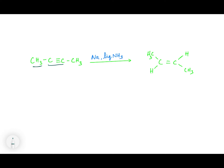This is the Birch reduction reaction. This is a disubstituted alkyne because both the hydrogens have been substituted by a methyl group. When you add sodium in liquid ammonia, what is formed is a trans alkene — because in this alkene, similar groups are present on opposite sides.